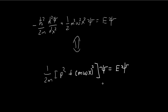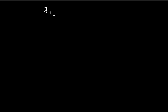In our last video, we derived this expression for the Schrödinger equation. This expression is completely equivalent to the expression above, and it is going to come in handy later on. So we're going to move on with our derivation of the stationary states of the quantum harmonic oscillator.